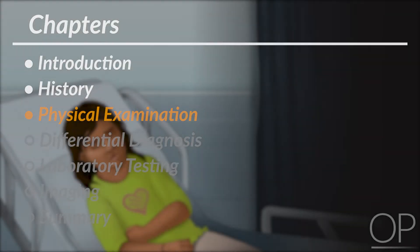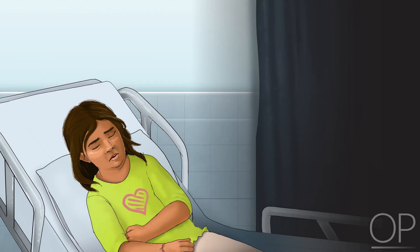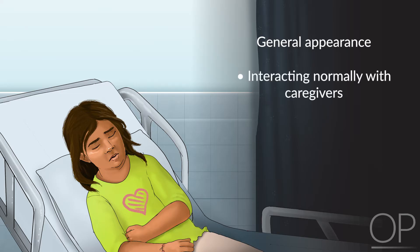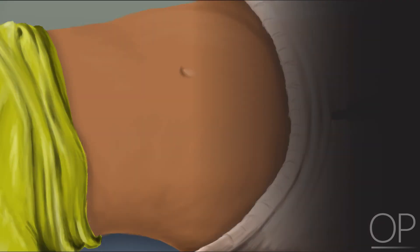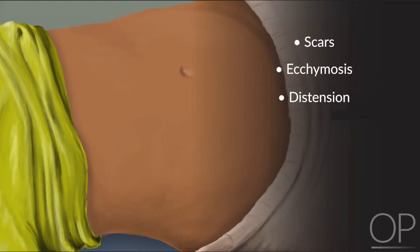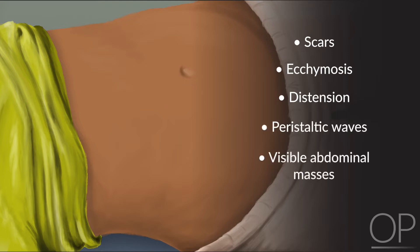Physical examination begins with vital signs. General appearance is crucial in assessing illness severity. Children who are not interacting normally with caregivers, have limited response to examination, or limit their movements due to pain, are more likely to have serious conditions. Abdominal examination begins with inspection. Of particular interest are scars indicative of prior surgeries which predispose to adhesion formation and intestinal obstruction, ecchymosis suggestive of recent trauma, distension concerning for ascites or bowel obstruction, peristaltic waves highly suspicious for obstruction, or visible abdominal masses.